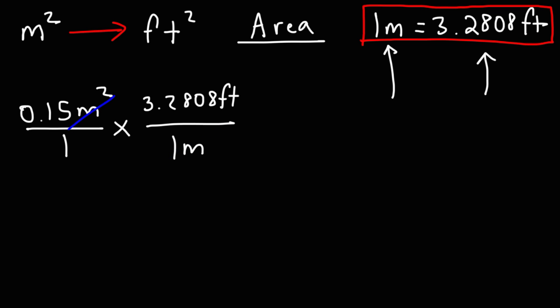Now, they won't completely cancel right now because we have square meters on the left, and we only have meters on the right. In order for them to completely cancel, we need to square the conversion factor.